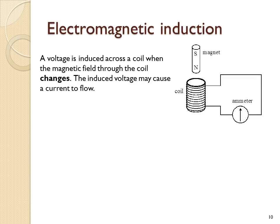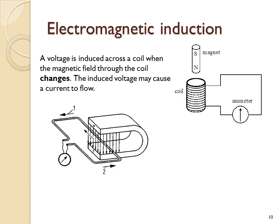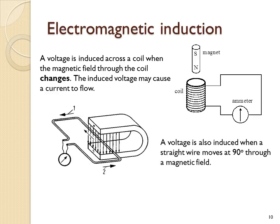A voltage is induced across a coil when the magnetic field through the coil changes. The induced voltage may cause a current to flow in the coil. So here, if the magnet was moved towards the coil, the ammeter needle would move and then go back to the centre when the magnet was stationary. If you then took the magnet away, the ammeter needle would move in the opposite direction. Once the magnet is a long way away, the ammeter needle would remain stationary. You can also induce a voltage across a wire if you move a straight wire through a magnetic field at 90 degrees to it.